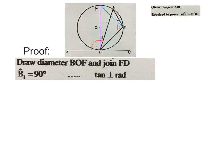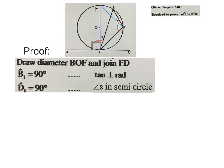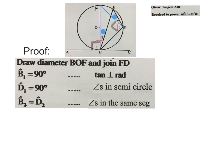Then you write B1 is equal to 90 degrees, tan perpendicular to radius or diameter if you want. Then you write D1 is equal to 90 degrees. So the angle there, D1, is 90 degrees. Angles in a semi circle is your reason. Then you write B2 is equal to D2, angles in the same segment.